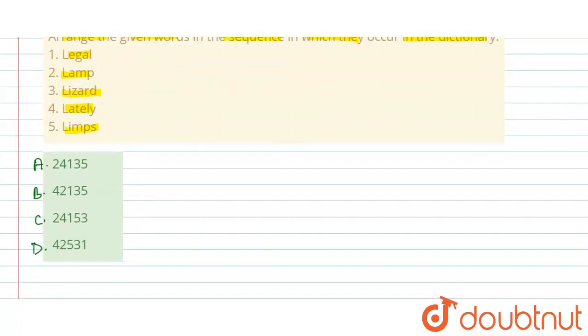So here we have to arrange them in dictionary order. Dictionary order means A to Z alphabetical order. The first one is first, the last one is in decreasing order.